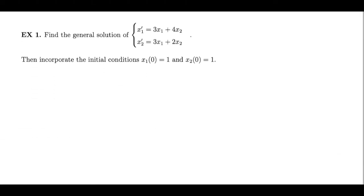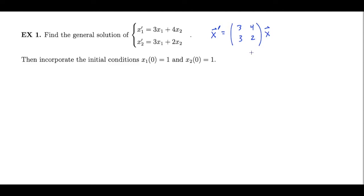In Example 1, we're given a two-by-two system, and we're also given initial conditions that we should incorporate after we've found the general solution. Let me write this same system using vector and matrix notation. This problem is exactly equivalent to being asked to solve x prime equals Ax, where A is my coefficient matrix. As we've stated, this will boil down to identifying the eigenvectors and eigenvalues of this coefficient matrix A.